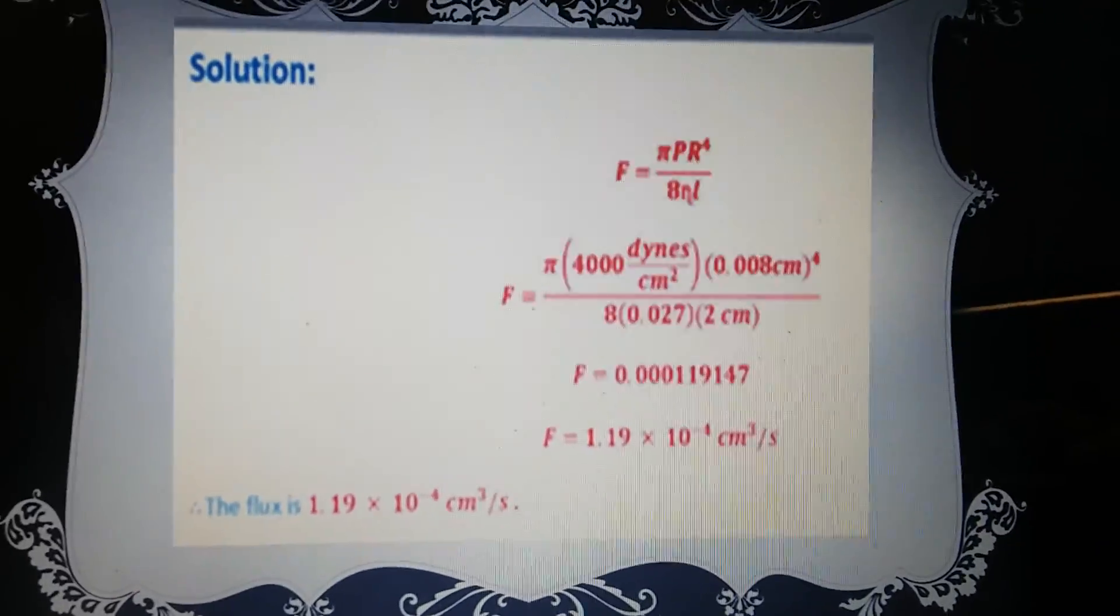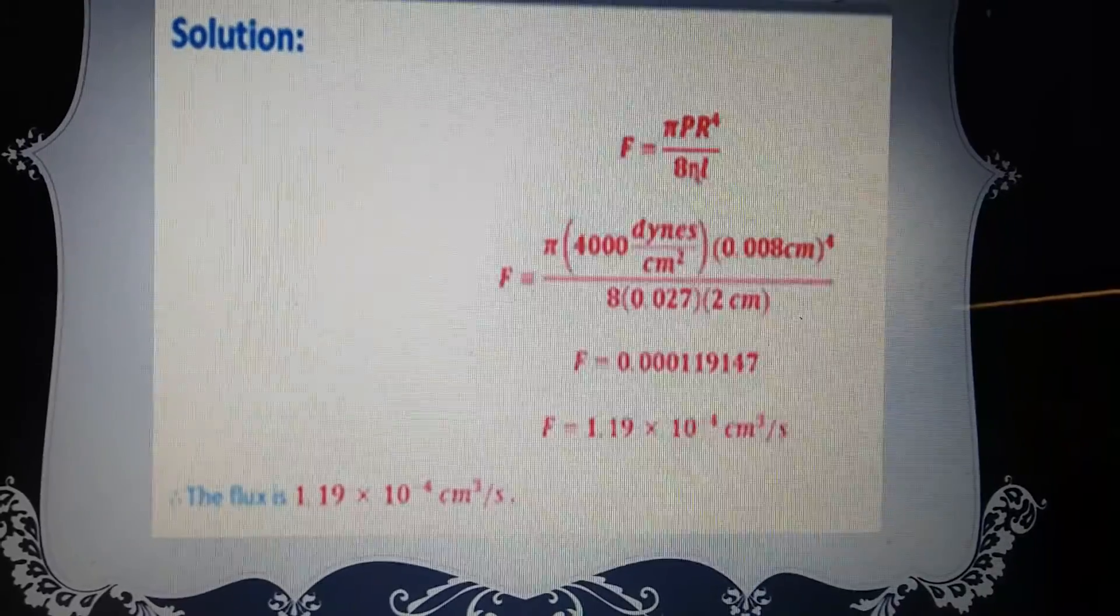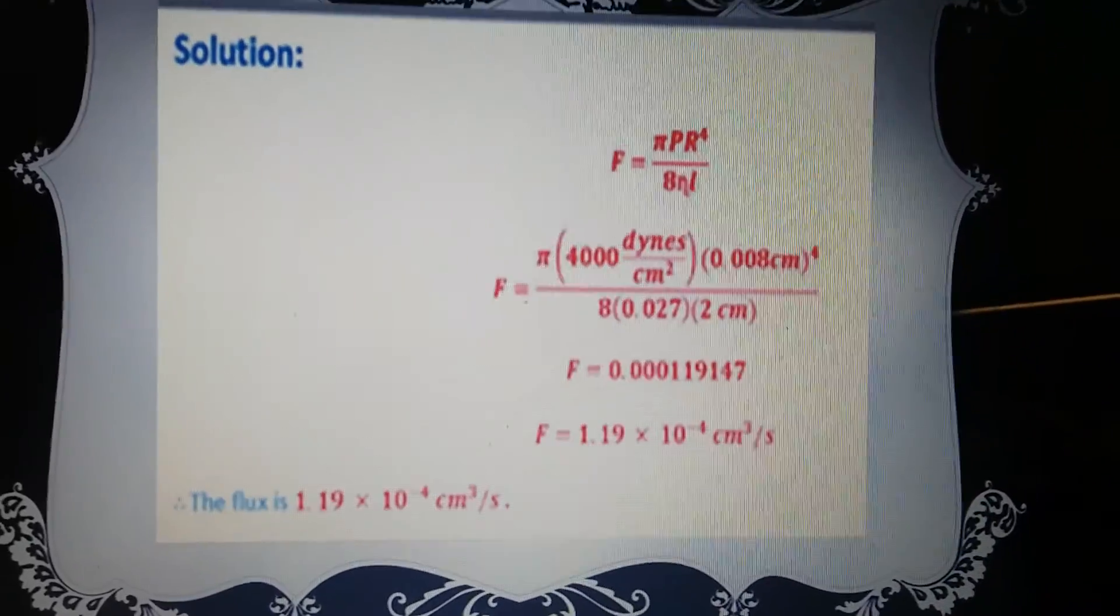Now the solution, after we plug everything in, the solution, therefore the flux is 1.19 times 10 to the negative 4 centimeters cubed per second.